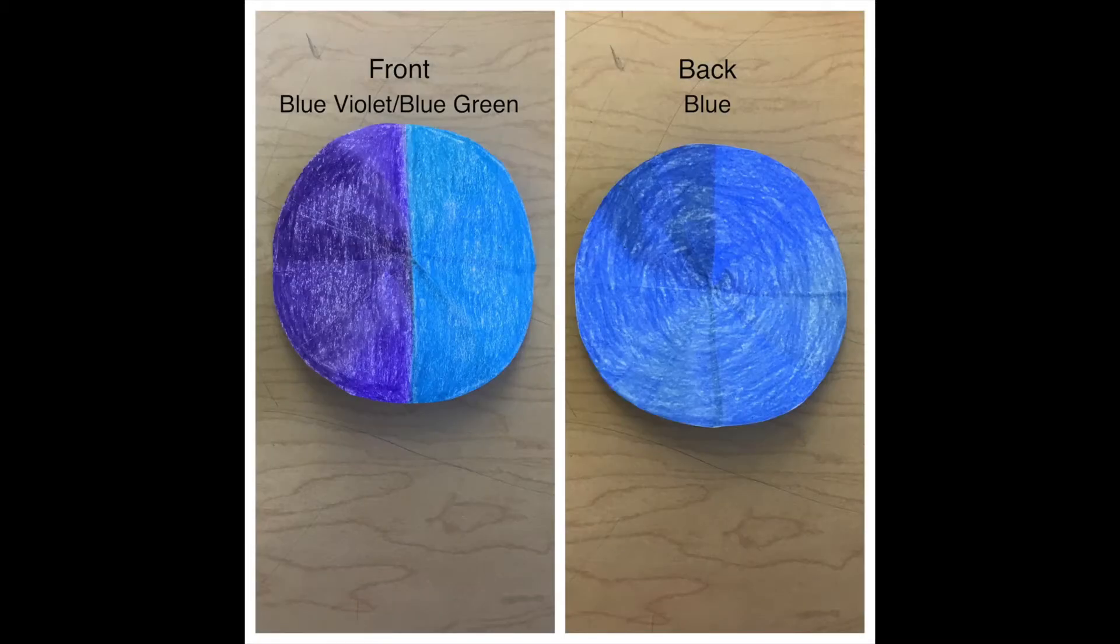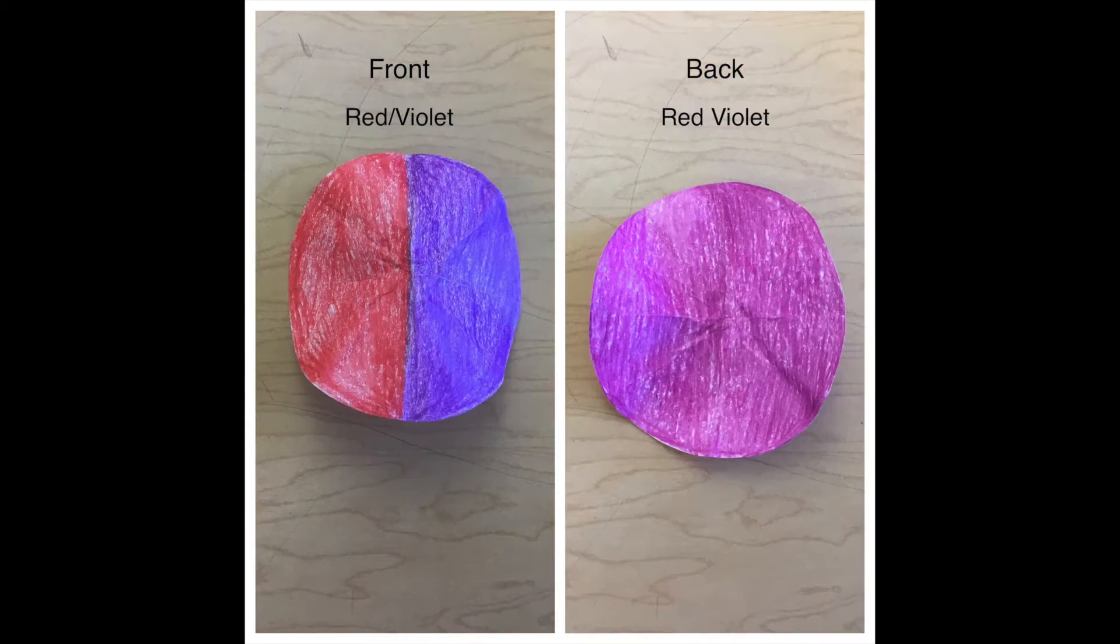The blue circle will have blue-green and blue-violet on one side and blue on the other side. The red circle will have red and violet on one side and red-violet on the other side. Remember, violet is the same as purple.